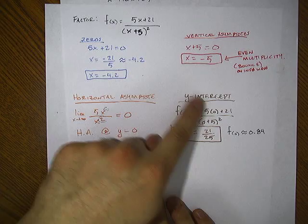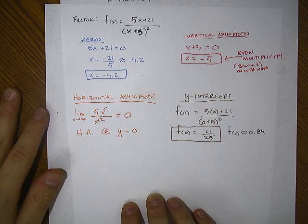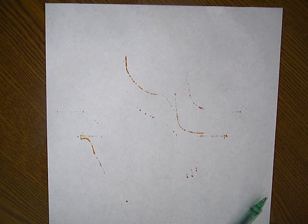The y-intercept, pretty self-explanatory here. You can see 5 times 0 plus 21 divided by 25. Pretty straightforward. Our y-intercept is going to be at .84, if you want to do it in decimal form.